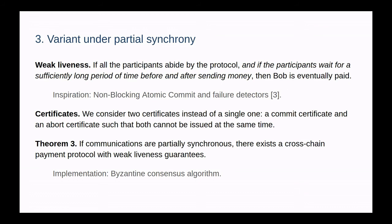Luckily, it is still possible to achieve some results under partial synchrony. We are going to replace strong liveness by weak liveness, where if all the participants are correct and wait for long enough, then the payment is eventually successful. The inspiration behind this property comes from the non-blocking atomic commit literature. We are also going to introduce two certificates — a commit certificate and an abort certificate — instead of a single one. Under this new set of assumptions, if communications are partially synchronous, there exists a cross-chain payment protocol with weak liveness guarantees. In practice, the implementation of such a protocol is going to rely on mechanisms such as a Byzantine consensus algorithm to ensure that the participants agree on the outcome of the transaction, even if the network is not synchronous.